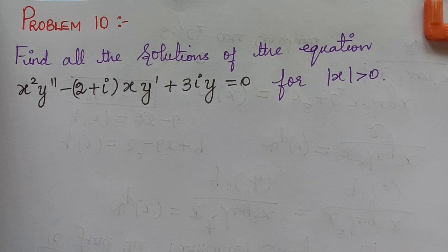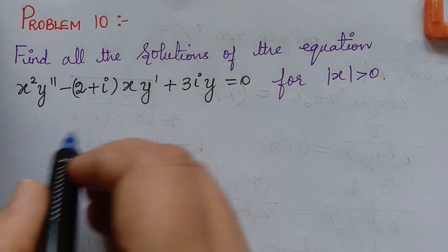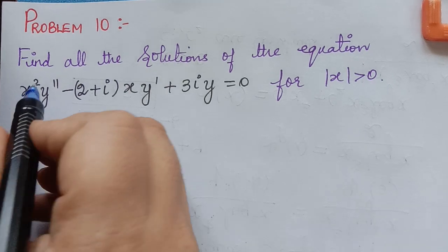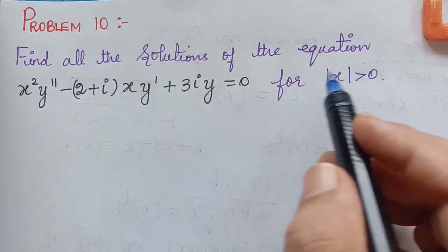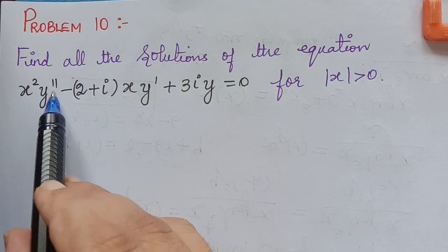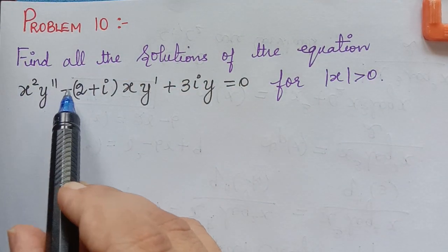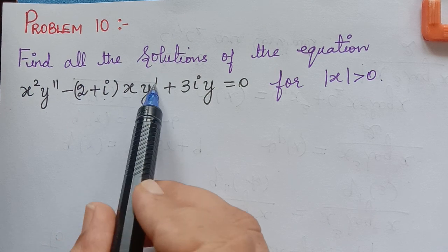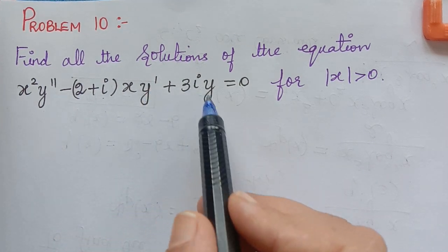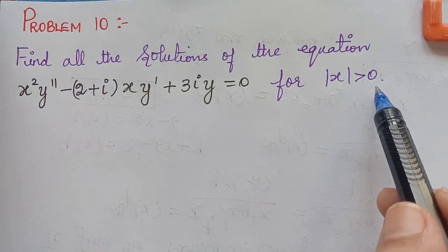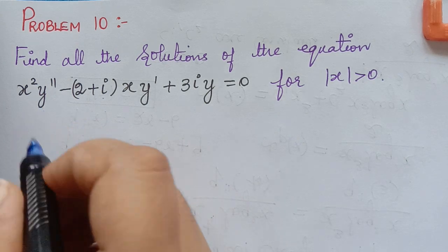Dear students, under the topic Euler's equation, here we have the next problem. We will find all the solutions of the equation x squared y double-dash minus (2 plus i) x y-dash plus 3i y equals 0, for modulus of x greater than 0.